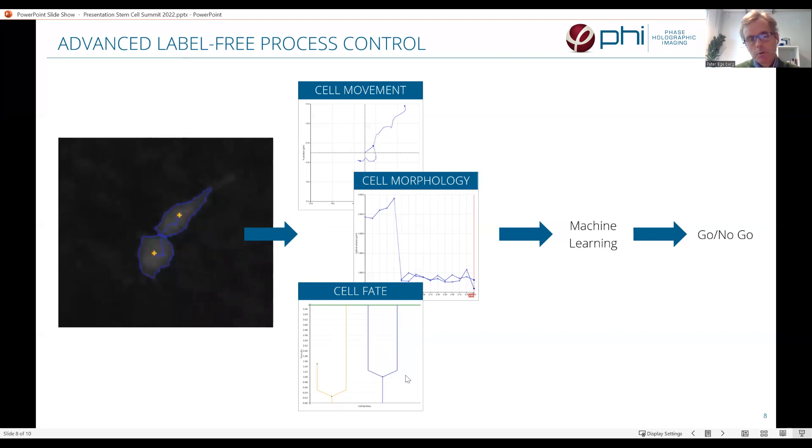Now, it's also possible to create a cell tree to quantify, for instance, cell division. Now, if we quantify this for a large number of cells and cellular events, and feed this into a machine learning algorithm, it would be possible to actually characterize whether a sample has sufficient quality to move further down in the process chain.